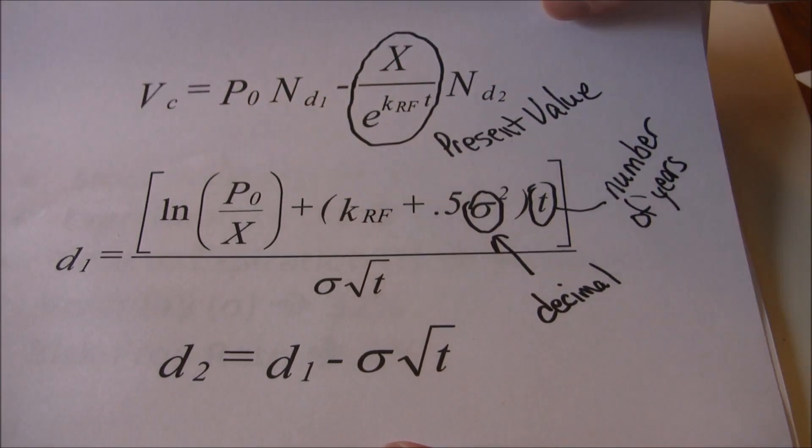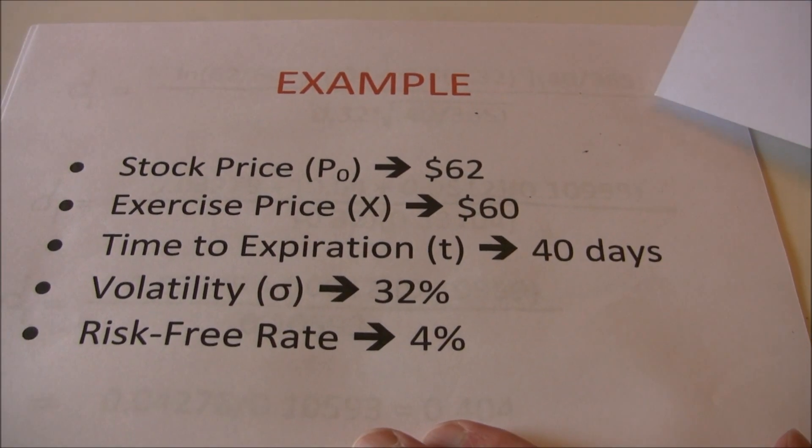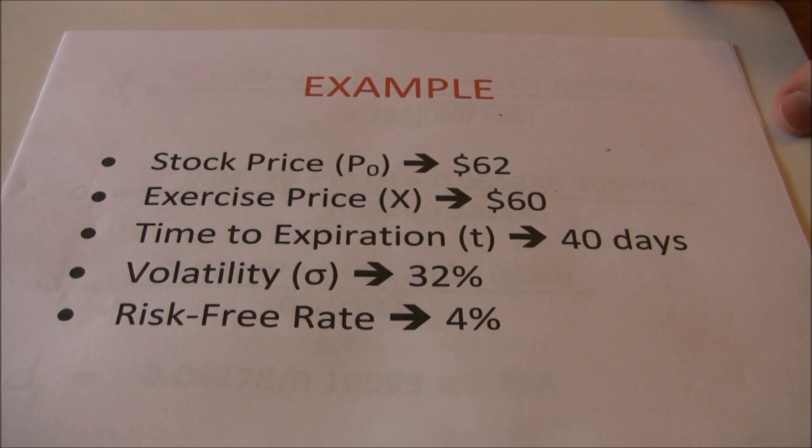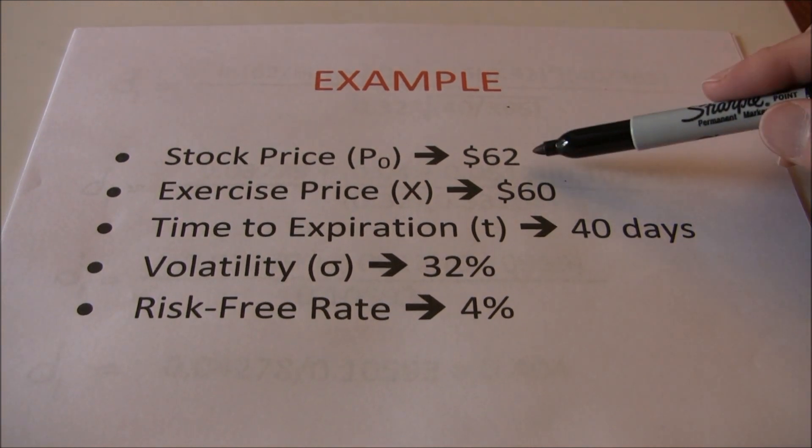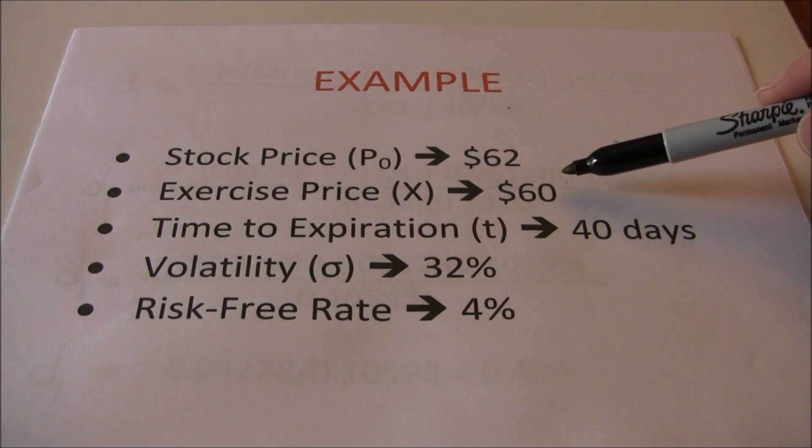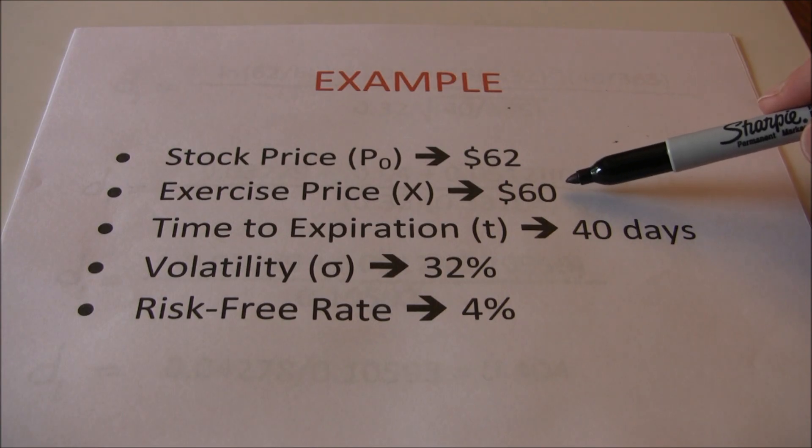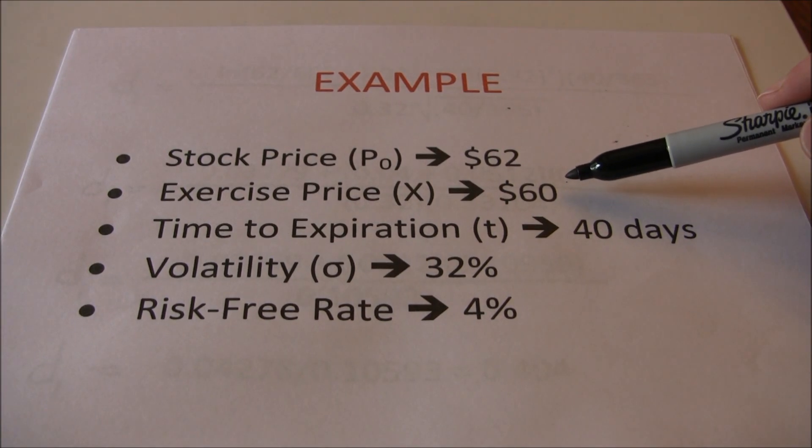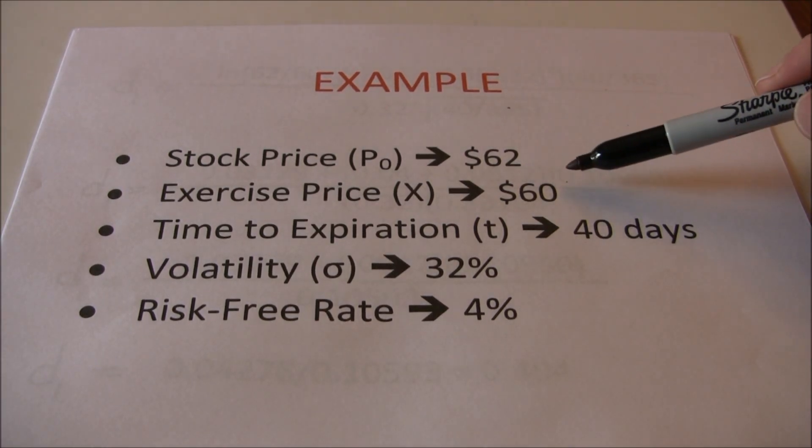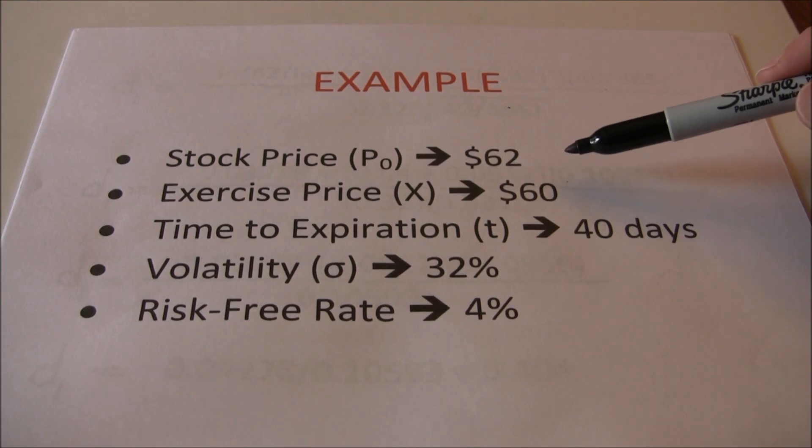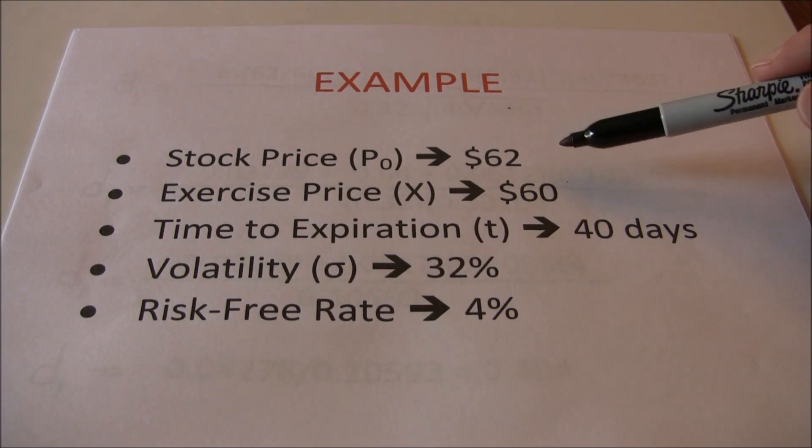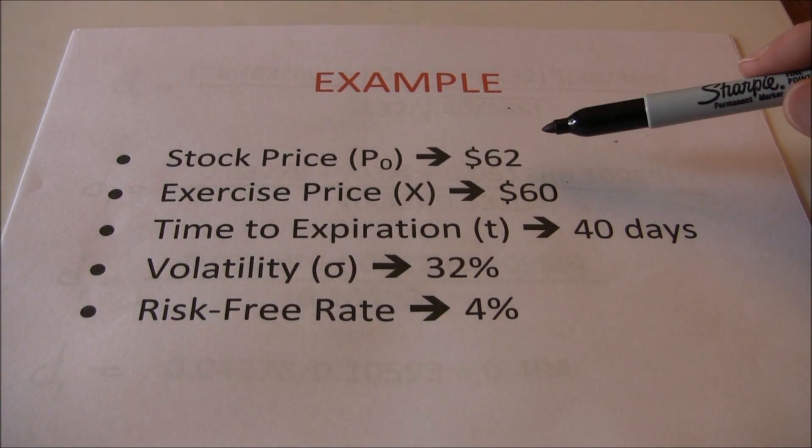Now in order to walk through the Black-Scholes option pricing model the best way is to set up an example and go through that. So let's start with an example. We've got a stock that's currently valued at $62. So our stock price is 62. That's the P0 in our formulas. The exercise or strike price is $60. Since we're looking at a call this option is currently in the money. If it expired today we would exercise it. It has an intrinsic value of $2. So we know the value of the option is going to be higher than $2. But how much higher? What is the speculative premium that should be attached to this option? That's what we're going to find with the Black-Scholes option pricing model.